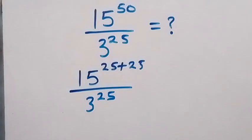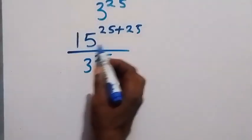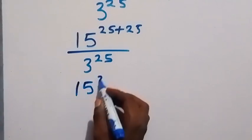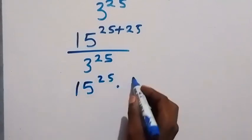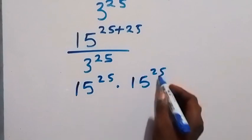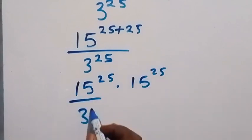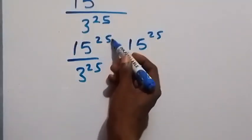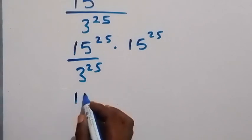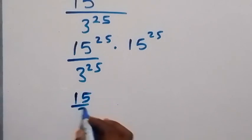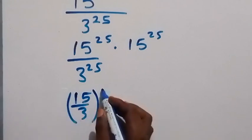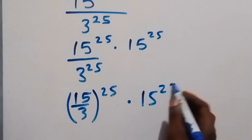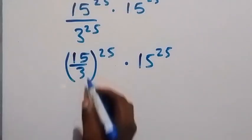From here we can also separate this using the law of indices as 15 raised to power 25 times 15 raised to power 25, then divided by 3 raised to power 25. Since we have the same power, from the law of indices we can write this as 15 over 3, then all raised to power 25, multiplied by 15 raised to power 25.